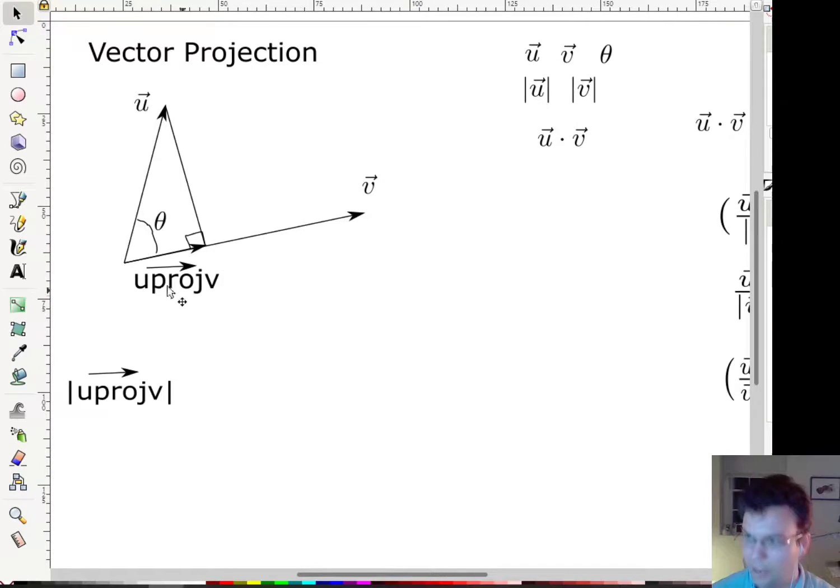So if we rearrange that we say, well, the adjacent length then is equal to the hypotenuse length, so the magnitude of u, which is the hypotenuse length, times the cosine of theta. So that is an equation for the length.